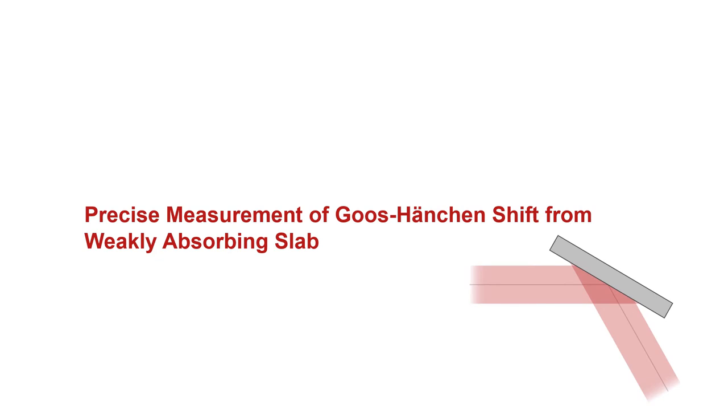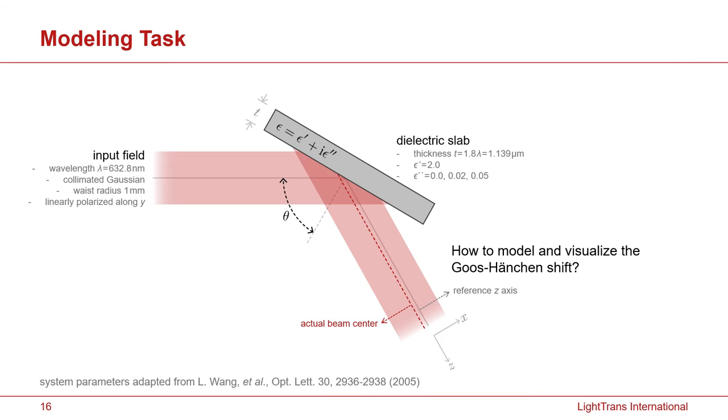The next example I'd like to show is another typically discussed effect in physical optics education. That is Goos-Hänchen shift. In order to demonstrate this effect, we prepare the example according to a literature report. So in this case, we use a dielectric slab and we use a Gaussian beam as the input on this slab and we change the incidence angle.